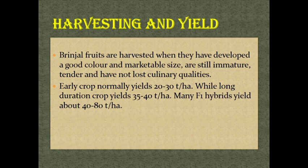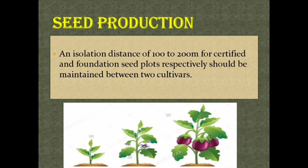Brinjal fruits are harvested when they have developed a good color and marketable size, are still immature, tender, and have not lost culinary qualities. Early crop normally yields 20 to 30 tonnes per hectare, while long duration crop yields 35 to 40 tonnes per hectare. Many F1 hybrids yield about 40 to 80 tonnes per hectare. Seed production: an isolation distance of 100 to 200 meters for certified and foundation seed plots respectively should be maintained between two cultivars.